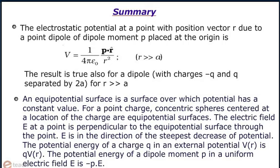The potential energy of charge Q in an external potential Vr is Q into Vr. The potential energy of a dipole moment P in a uniform electric field E is minus P dot E.